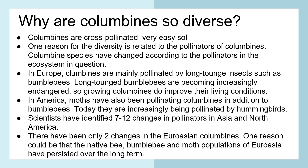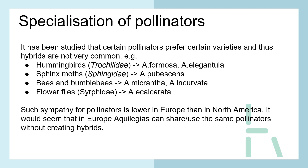One reason for fewer pollinator changes in Euro-Asia could be that the native bees, bumblebee and moth populations have persisted over a long time. Specialization of pollinators: certain pollinators prefer certain varieties, and thus hybrids are not very common. For example, hummingbirds are pollinating Formosa and Elegantula; sphinx moths are pollinating Pubescens; bees and bumblebees pollinate Migranta and Incurvata; and flower flies pollinate Ecalcarata.